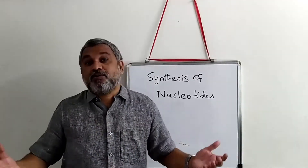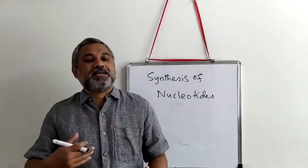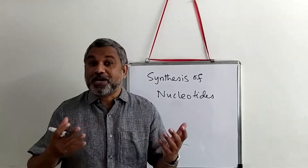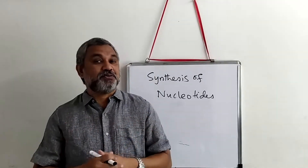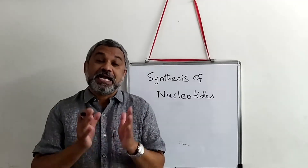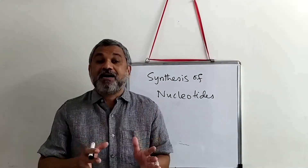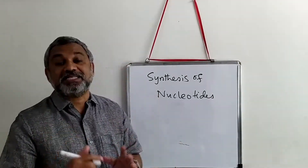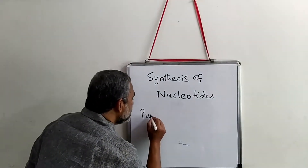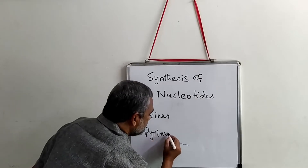Nucleotides were discovered by Alexander Todd, who won a Nobel Prize for their discovery. Depending on the size of the nucleotides, they are put into two categories: purines and pyrimidines.